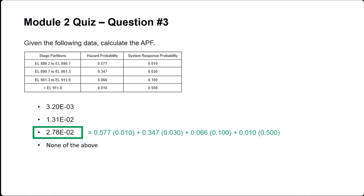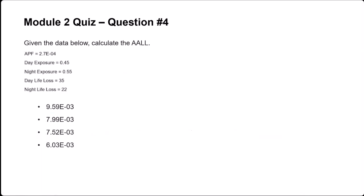Question four is to calculate the average annual life loss. We're given the annual probability of failure, day and night exposure rates, and day and night life loss. It's going to be our exposure-weighted life loss multiplied by the APF. The correct answer is 7.52 times 10 to the minus 3. I'm taking the day exposure multiplied by the day life loss, adding the night exposure times the night life loss, and that entire quantity is multiplied by the annual probability of failure.